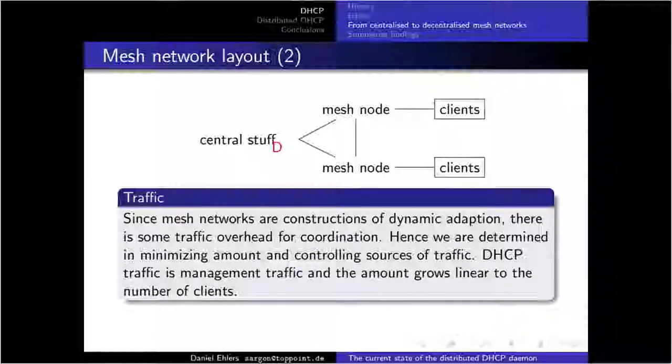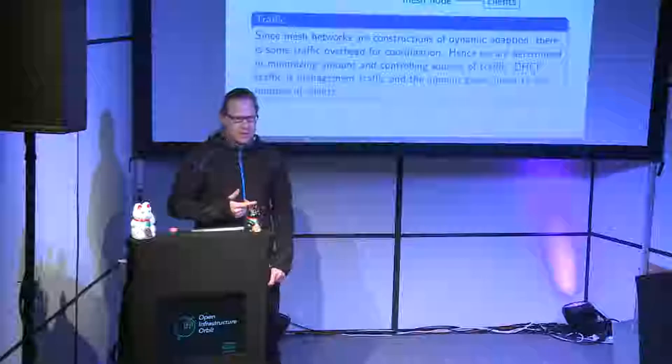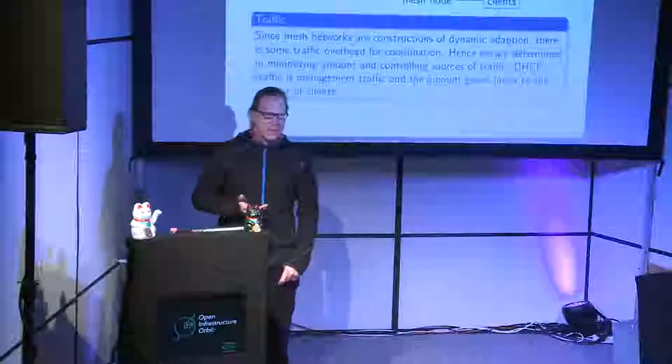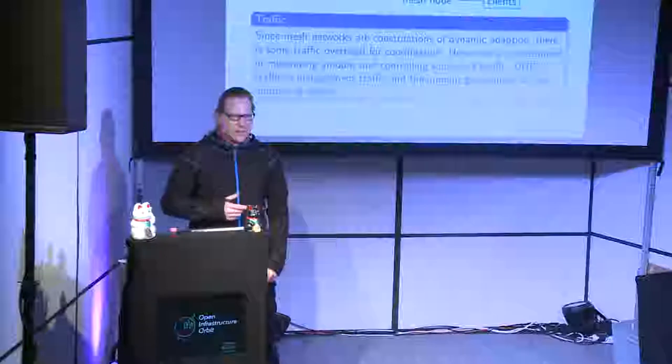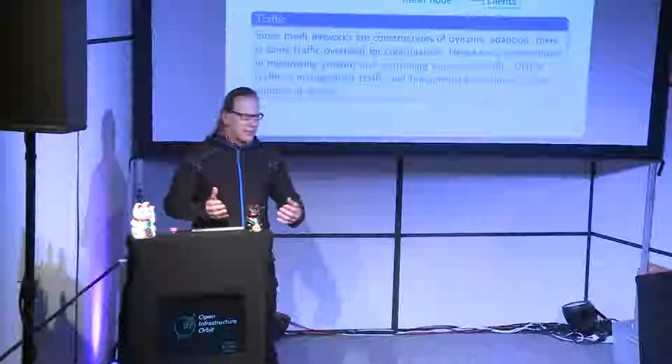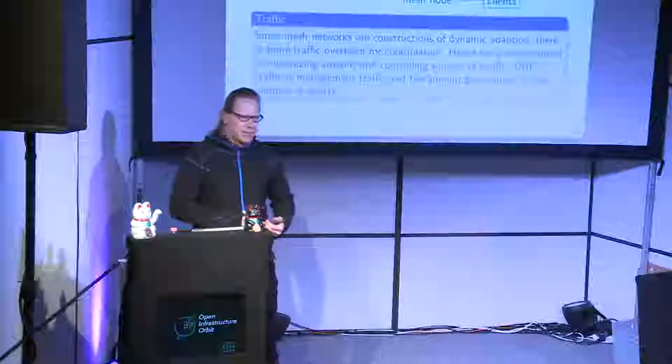Now the mesh nodes not only connect to the central components but also connect to each other. In this step we don't have all the functions we need for a running IPv4 mesh network on the mesh nodes, so we still need the central components. Mesh networks dynamically adapt to the current situation — when you have a new mesh node, you must adapt routing. We are very determined to minimize traffic in these networks, and DHCP counts as management traffic. Sadly, this traffic scales with the number of clients.